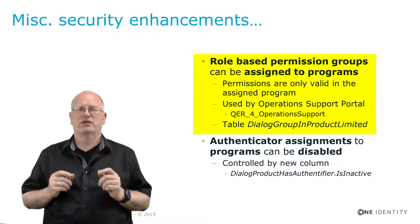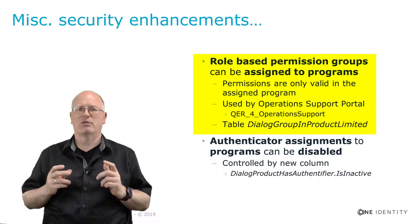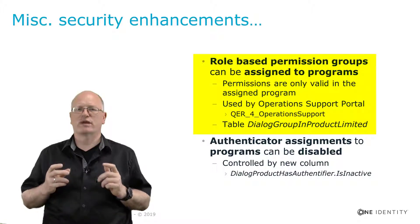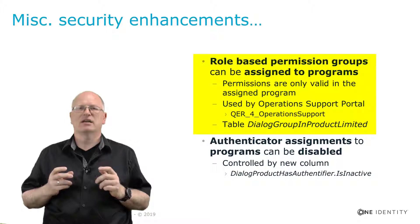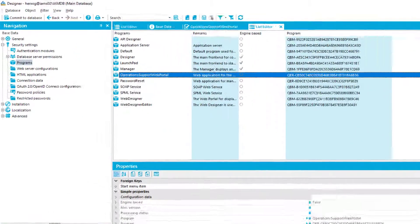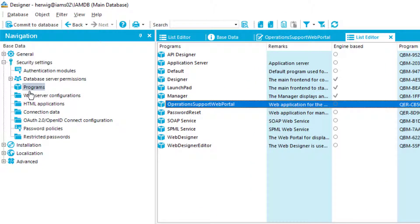New permission groups have been created for this purpose. A good example is the Operations Web — there is a QER operations support group assigned directly to the Operations Web. The underscore 'for' underscore naming convention indicates it is a permission group defined for application roles. In Designer, under the base data section, the Programs filter under Security Settings shows all programs stored in Identity Manager.